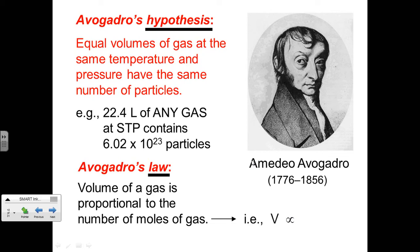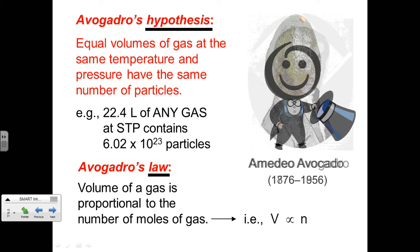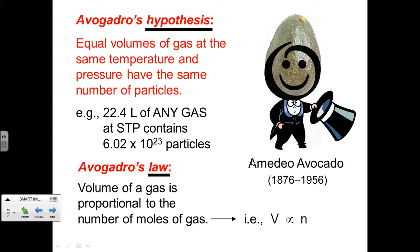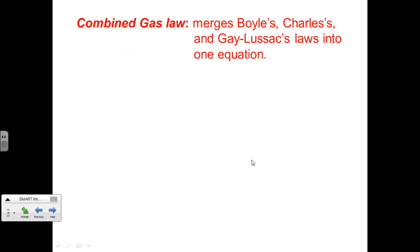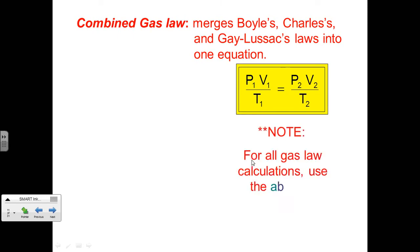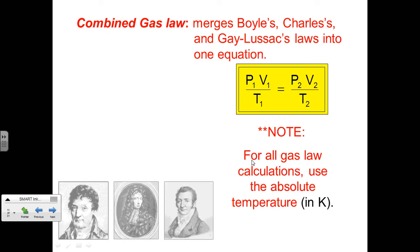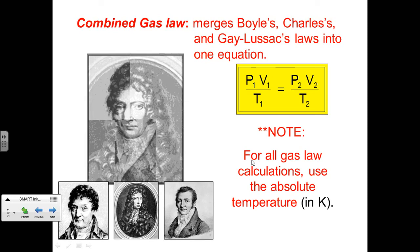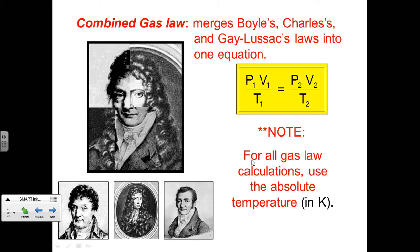Interestingly, Avogadro's name is associated with the guacamole and avocado connection — Avogadro's number. The combined gas law represents an extension of Boyle's, Charles', and Gay-Lussac's laws, combining the parameters of pressure, volume, and temperature. For all gas law calculations, use the absolute temperature in Kelvin. It merges all three laws, so you want to maintain consistency in those measurements and calculations.